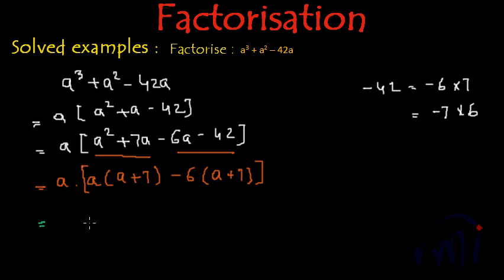And this can be written as 'a' will be written as it is and inside the square brackets this a + 7 is common in both the terms. So I will take this as common and we will have this 'a' and this -6 inside another bracket.